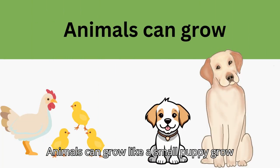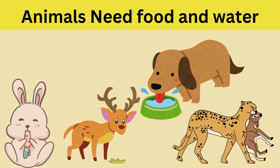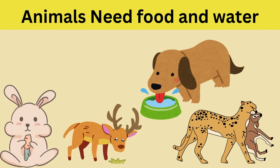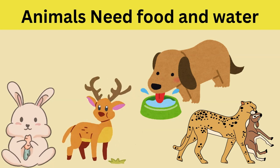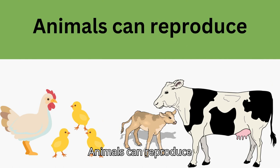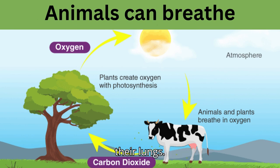Animals can grow — for example, a small puppy grows into a dog. Animals also need food and water. Animals can reproduce. Animals can breathe in fresh air using their lungs.